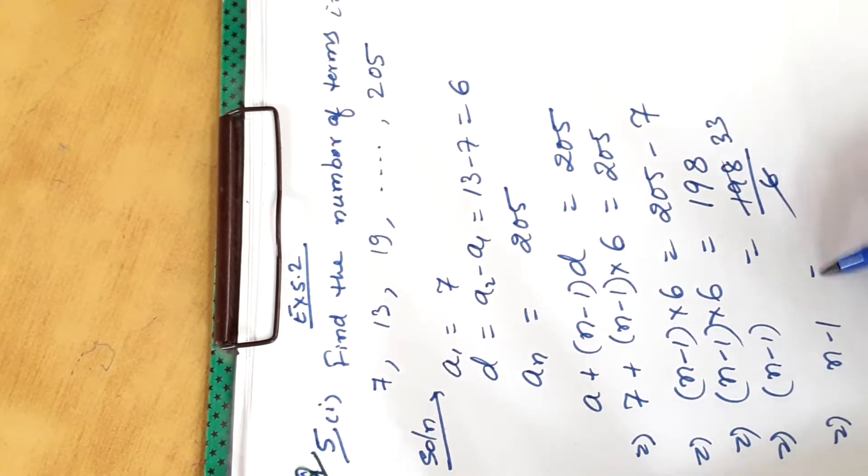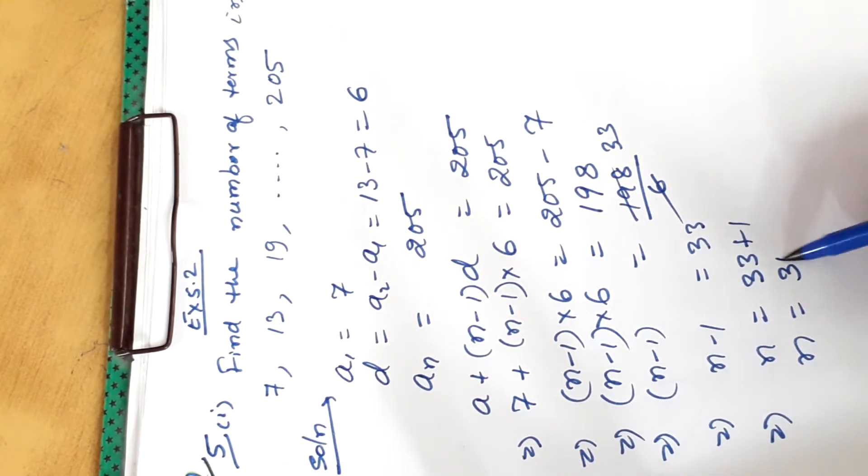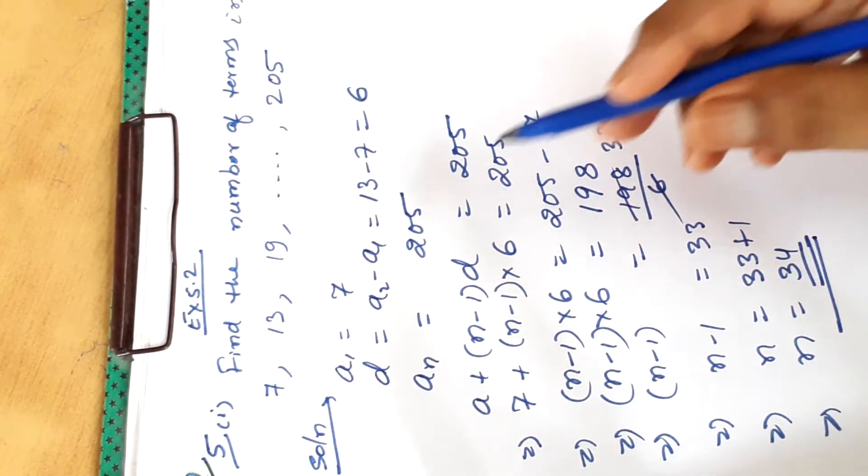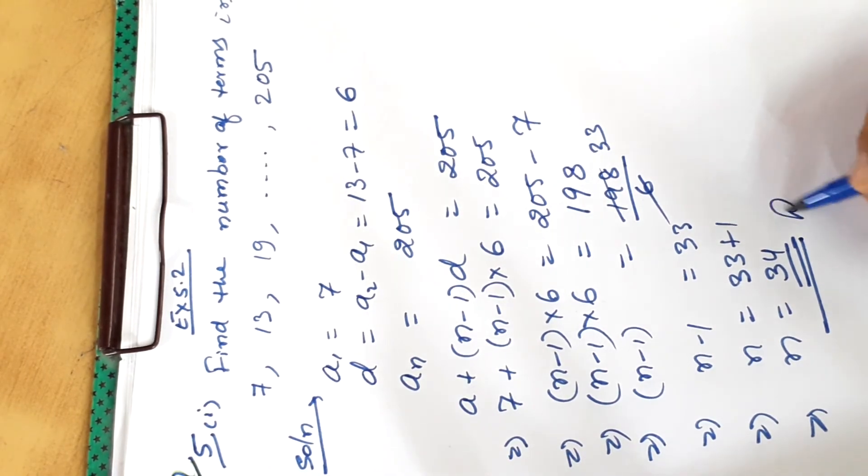N minus 1 is equal to 33. Therefore N is equal to 33 plus 1. N is equal to 34. It means there are 34 terms in this AP and 34 is our answer.